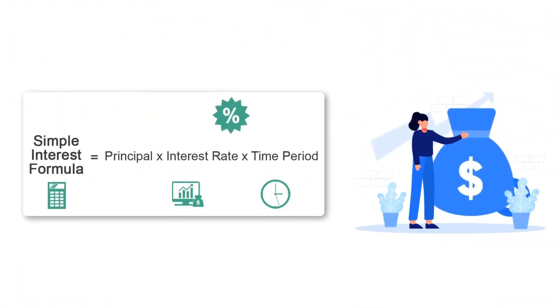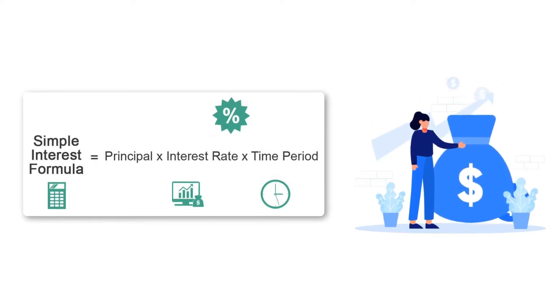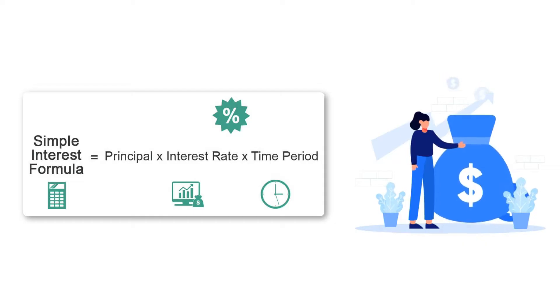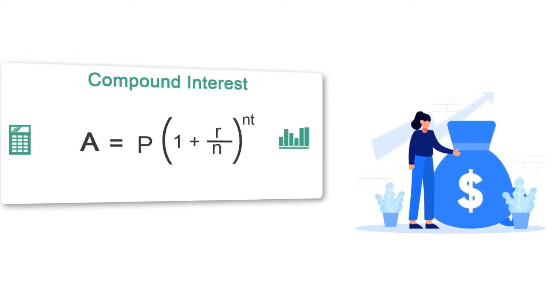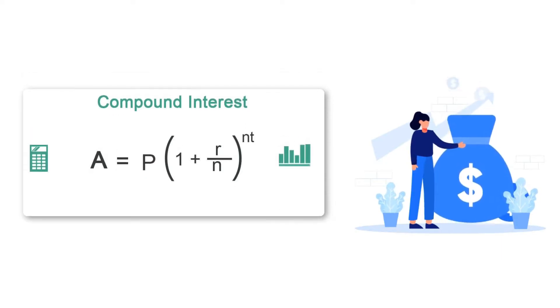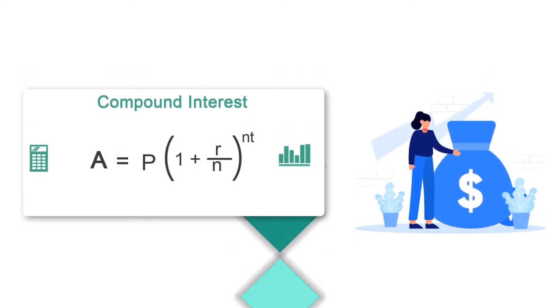The first ones to start with are the ones for interest — simple interest and compound interest. Simple interest is equal to the principal times the rate times the time, and it's basically a formula we can use to find the interest earned on an investment or a loan. Compound interest is different — it's interest on your interest. That's where they get the word 'compounded' from.